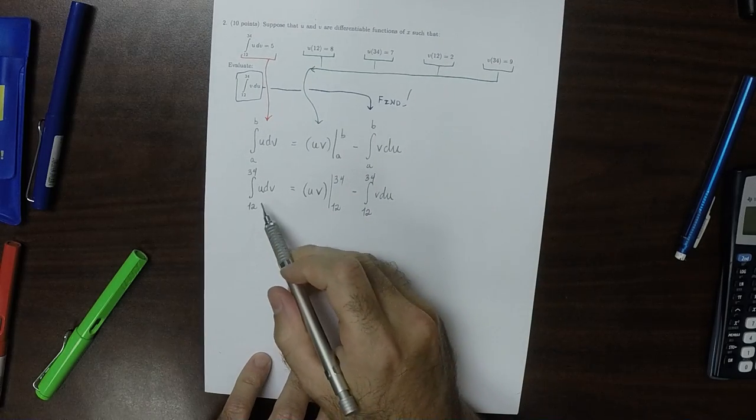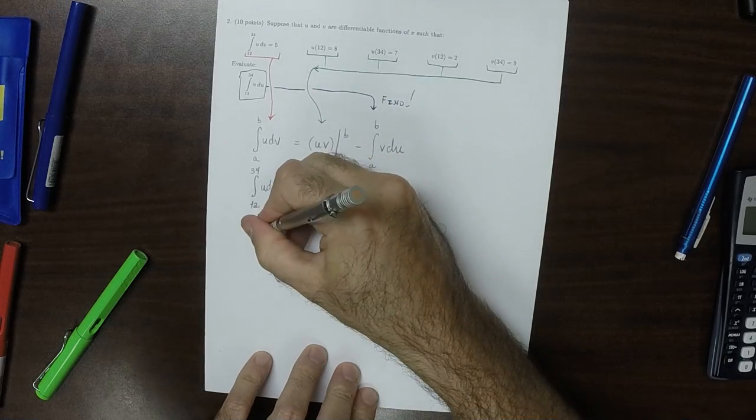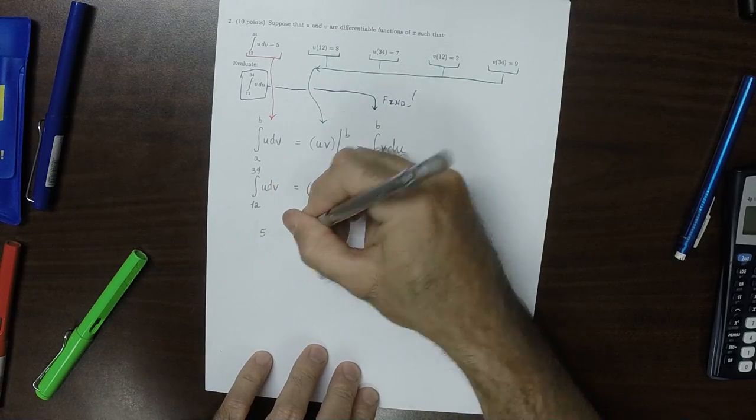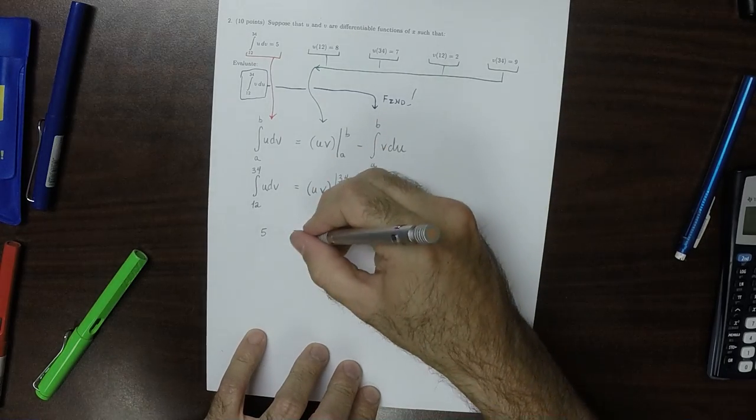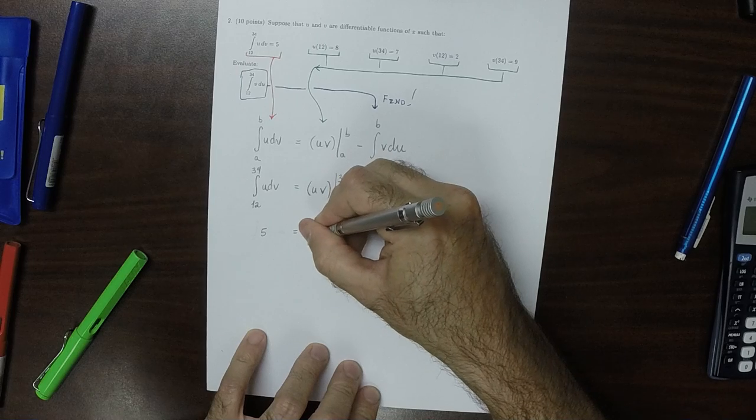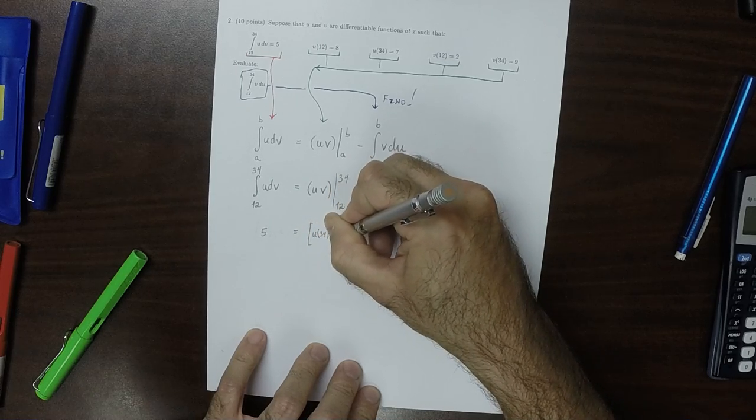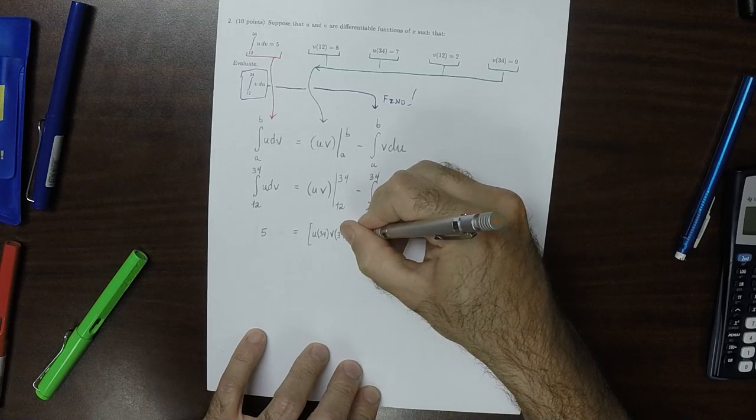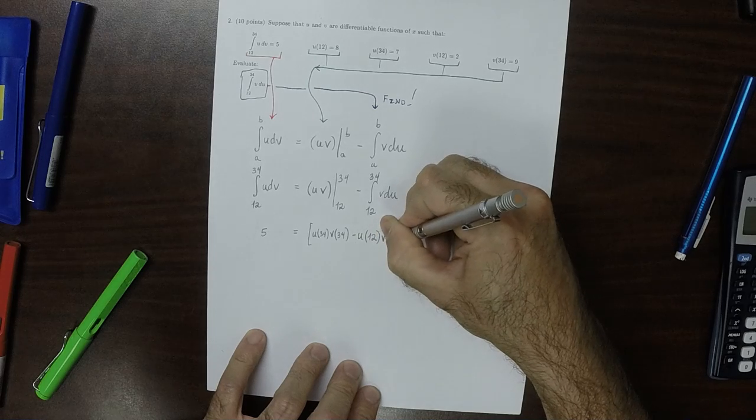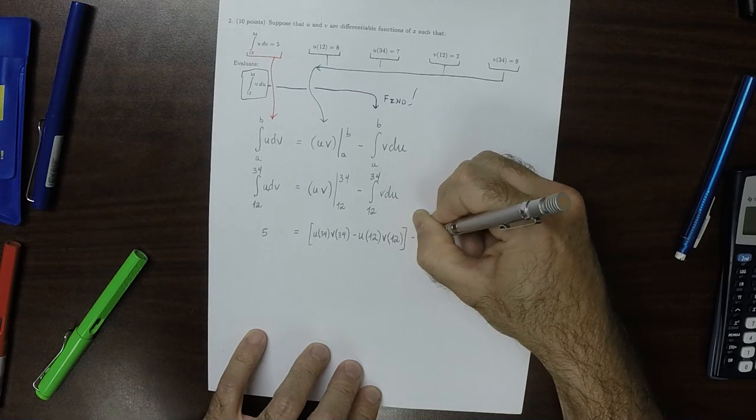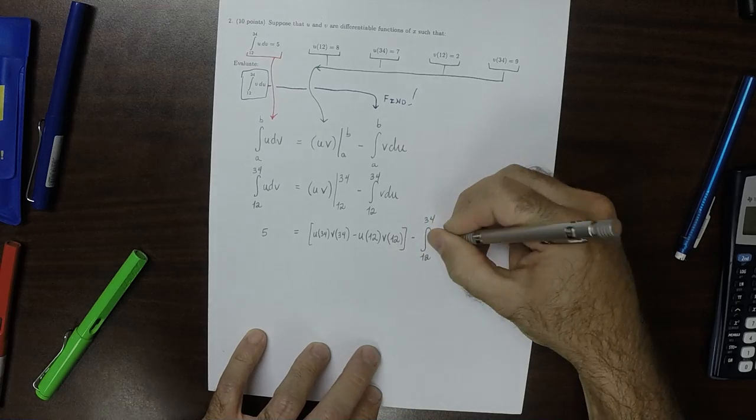Well, the first thing we can do is replace this one with 5. So that's 5 is equal to, well, plugging all that in, that would be u evaluated at 34 times v evaluated at 34 minus u evaluated at 12 times v evaluated at 12, and then minus the integral from 12 to 34 of v du.